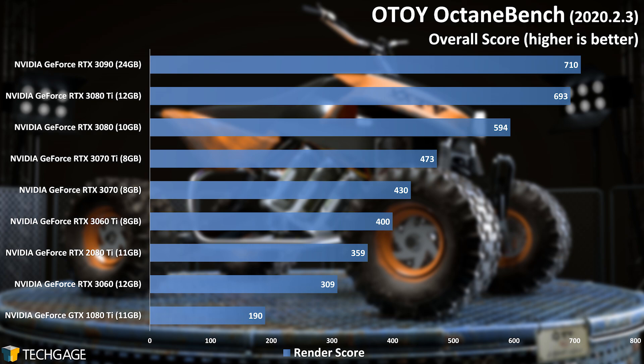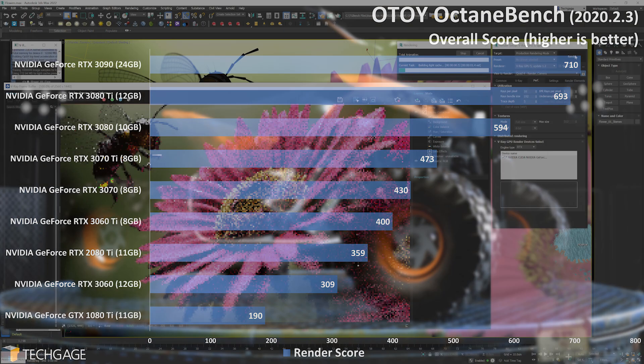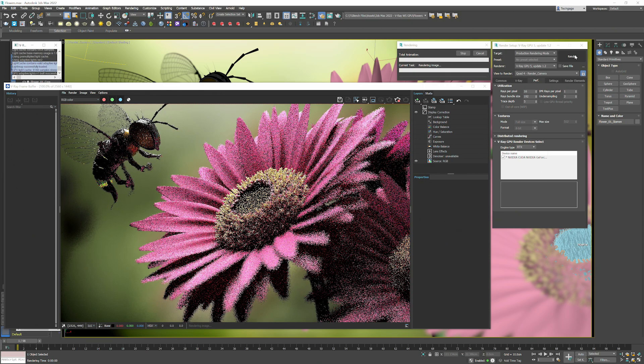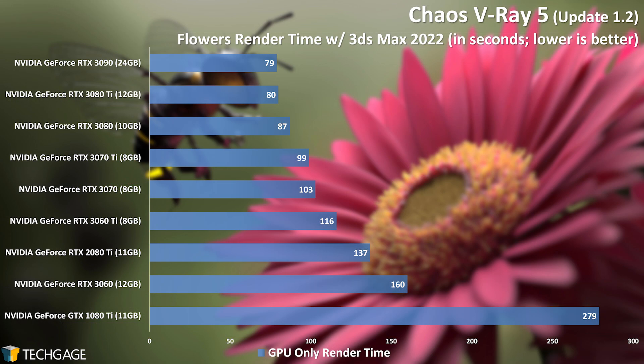The standalone Octane Bench benchmark backs up our real-world test pretty well. As NVIDIA's Jensen Huang loves to say, the more you buy, the more you save. In Octane's case, the GPU you choose really does make an incredible difference to how many frames you can render in a given amount of time. If your budget allows, adding multiple GPUs will accelerate the rendering further — which is what we're sure you love to hear during ongoing chip shortages. With our first V-Ray render using CUDA exclusively, we're seeing some great scaling all around, and more proof that the GTX 1080 Ti is getting up there in age. We can also see that the RTX 3080 Ti, despite costing hundreds less than the RTX 3090, effectively delivers the same performance.